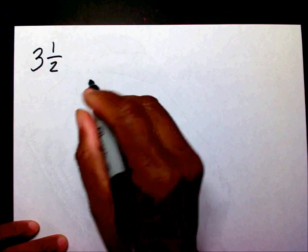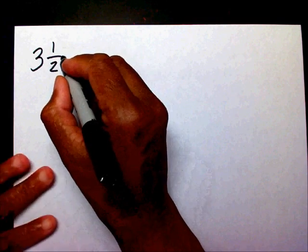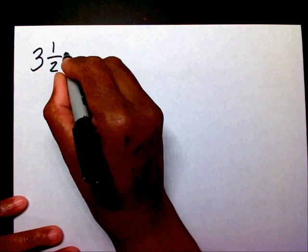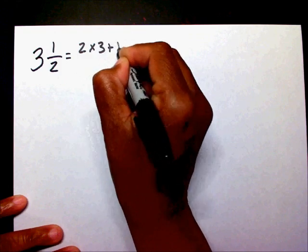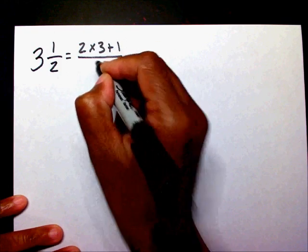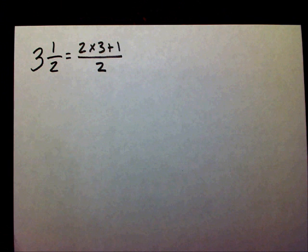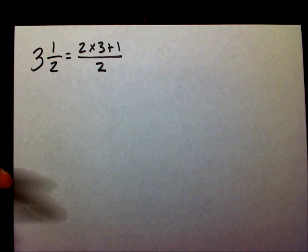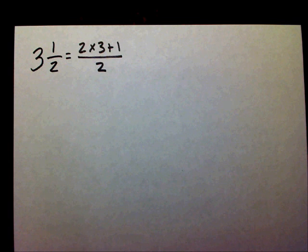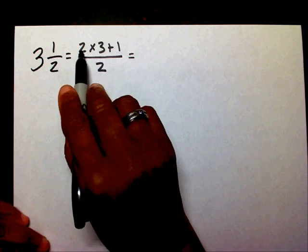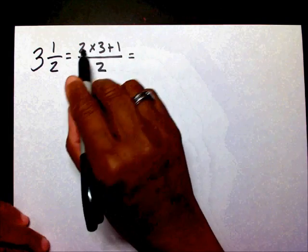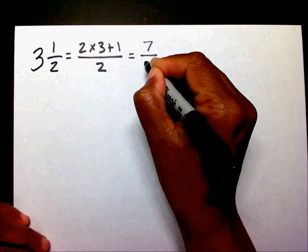For example, three and one half — we're going to multiply two times three plus one and put this over two. I did a video on changing mixed numbers into improper fractions, so I'm just going to give you one example here. If you need more examples, please watch that video. So I multiplied two times three and added one — two times three is six plus one is seven over two.